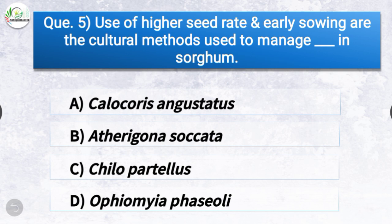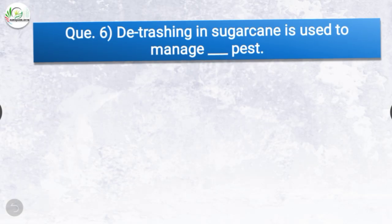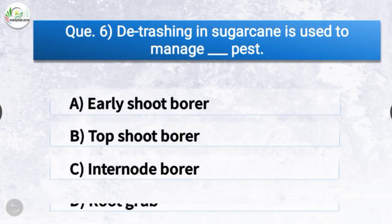Question number five: Use of higher seed rate and early sowing are cultural methods used to manage sorghum dash. The correct answer is option B, Atherigona soccata, which is also known as sorghum shoot fly — use of higher seed rate and early sowing are cultural methods used to manage sorghum shoot fly.